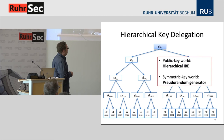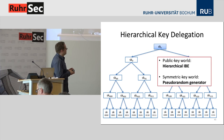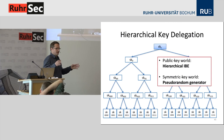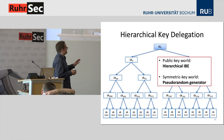How do we get these properties? In the public key world, we use a tool called hierarchical identity-based encryption, for which there are plenty of constructions. In the symmetric key world it's even easier: we just use a standard length-doubling pseudorandom generator and can very easily construct this tree structure.